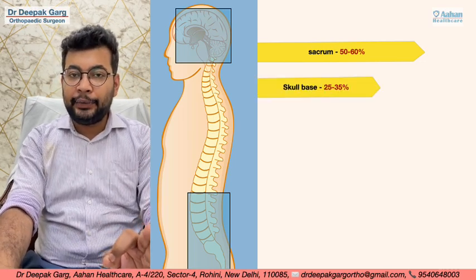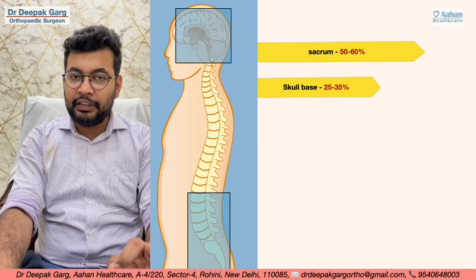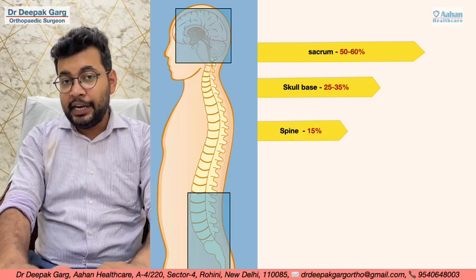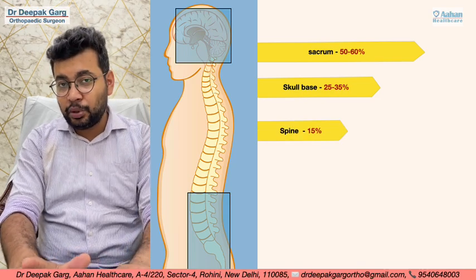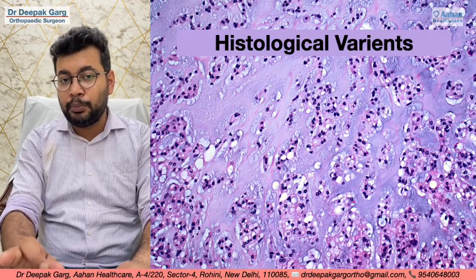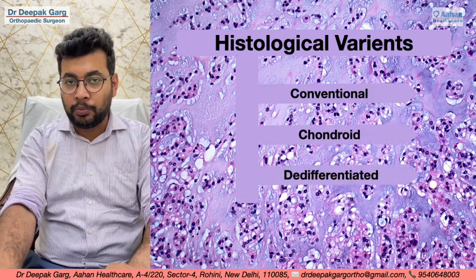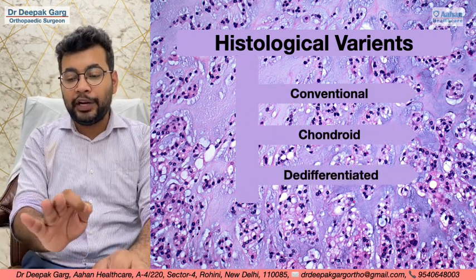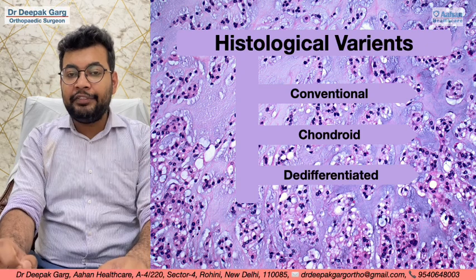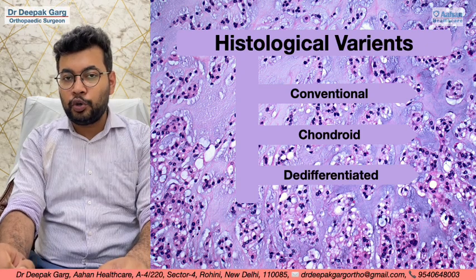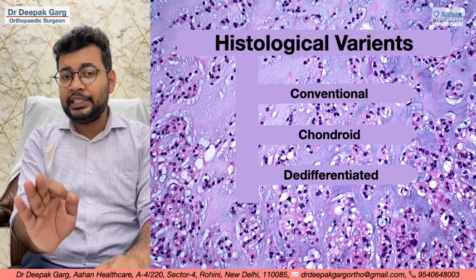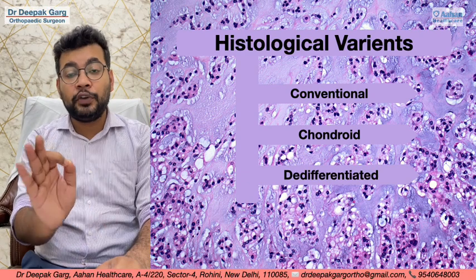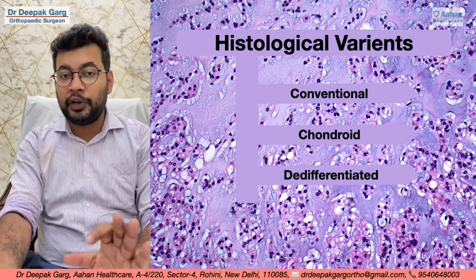The skull base is approximately 25 to 35% and the spine is approximately 15%. Chordoma has various histological subtypes: the most common is conventional Chordoma, followed by chondroid Chordoma and de-differentiated Chordoma. De-differentiated Chordoma follows the guidelines for soft tissue sarcoma for treatment.